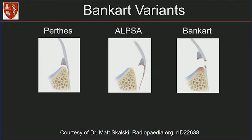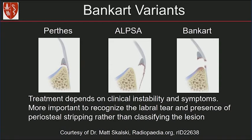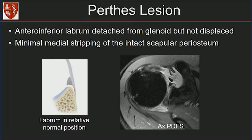Now we get into the Bankart variants: Perthes and ALPSA. The important thing is that treatment depends on clinical instability and symptoms, so it's more important to recognize the labral tear and periosteal stripping rather than naming the specific lesion. The Perthes lesion occurs when the anterior inferior labrum is detached from the glenoid but not displaced, with minimal medial stripping of the intact scapular periosteum. On axial PD fat-suppressed image, the anterior inferior labrum is detached from the glenoid; the periosteum is intact with mild stripping — this would be a Perthes.